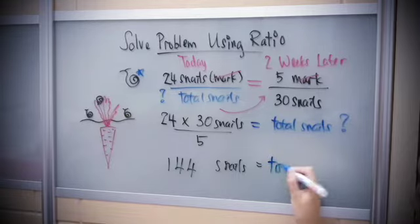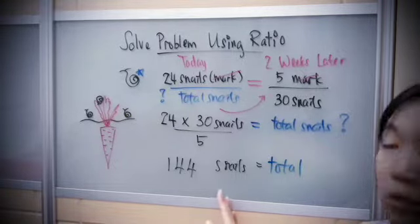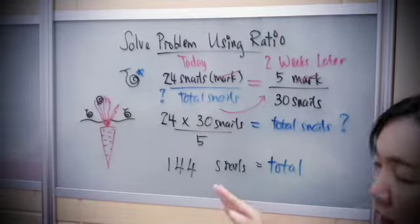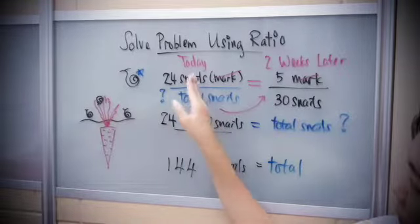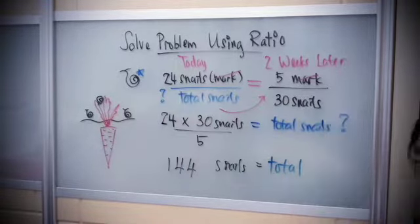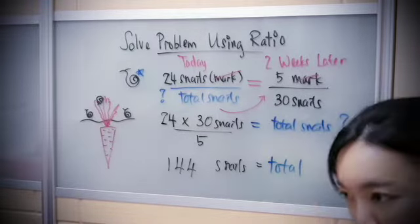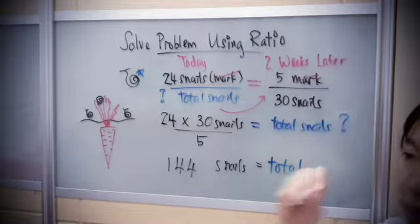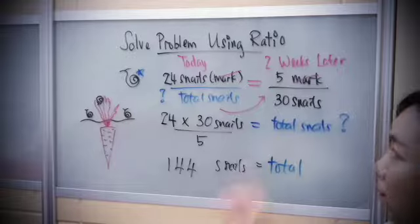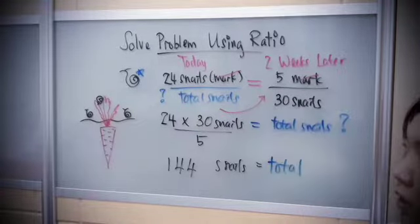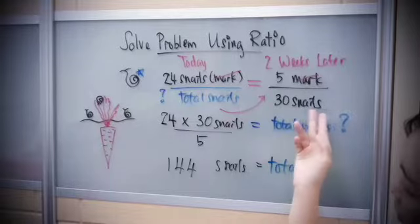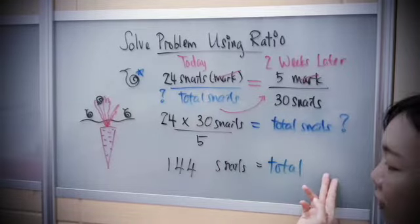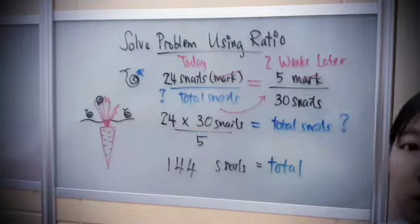The total snails in the farm is 144. This is the way scientists or farmers can estimate how many snails are there — by using two happenings: today and two weeks later. I collect the snails, mark them, release them back; two weeks later I come back, collect randomly, check how many are marked, identify the two ratios, put an equal sign between them as a proportion, and solve to get the total estimated snails in the farm.